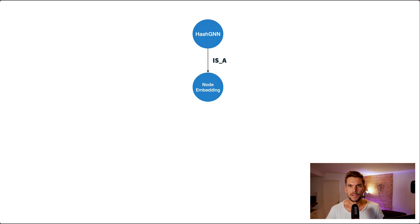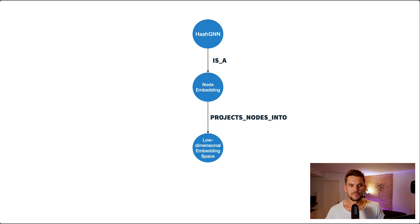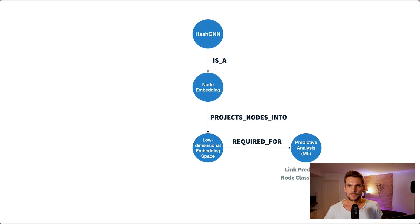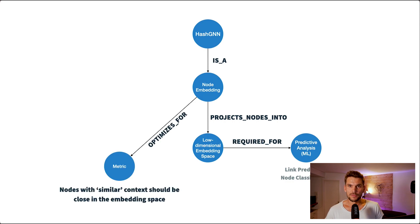HashGNN is a node embedding algorithm, and we use node embedding algorithms to project our nodes in the graph into a lower dimensional embedding space. We project nodes to vectors, and these vectors we can use for predictive analytics and advanced analytics, to solve problems like link prediction and node classification. Node embedding algorithms optimize for one particular metric: nodes with similar context should be close in the embedding space.